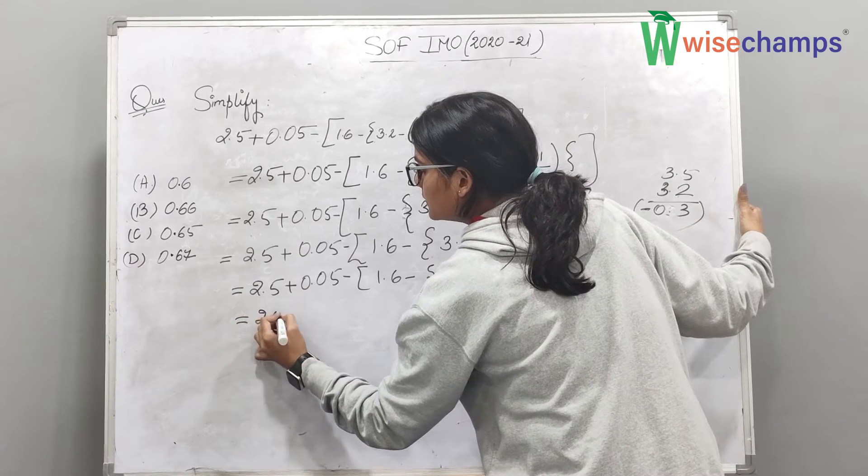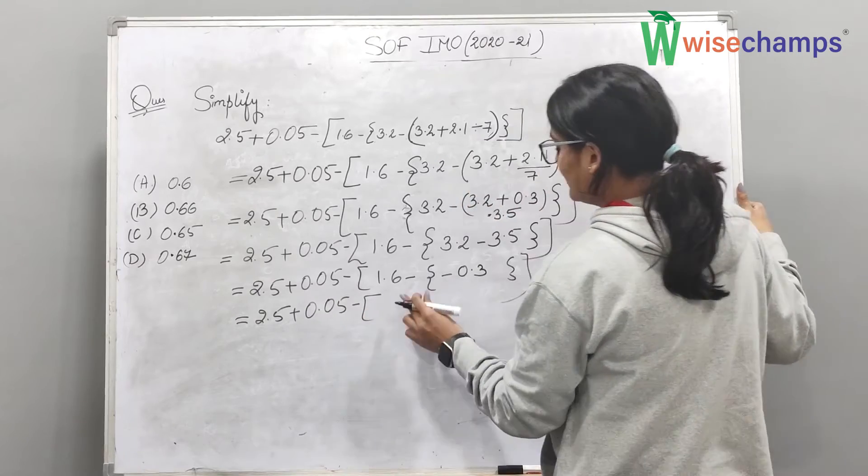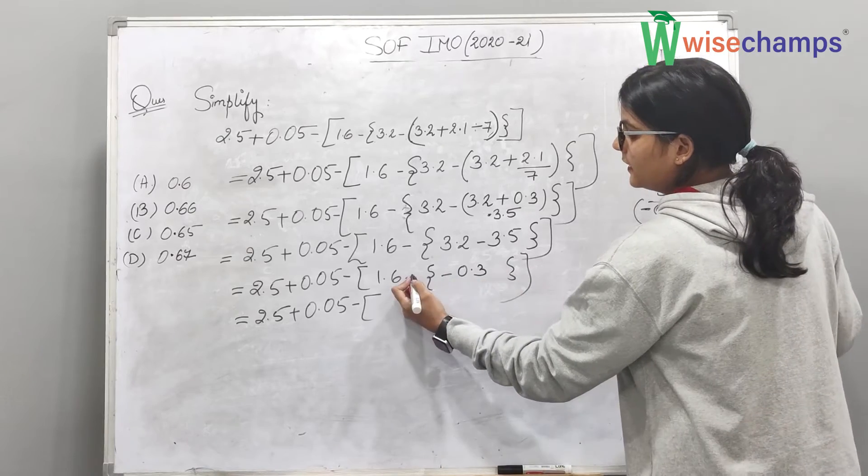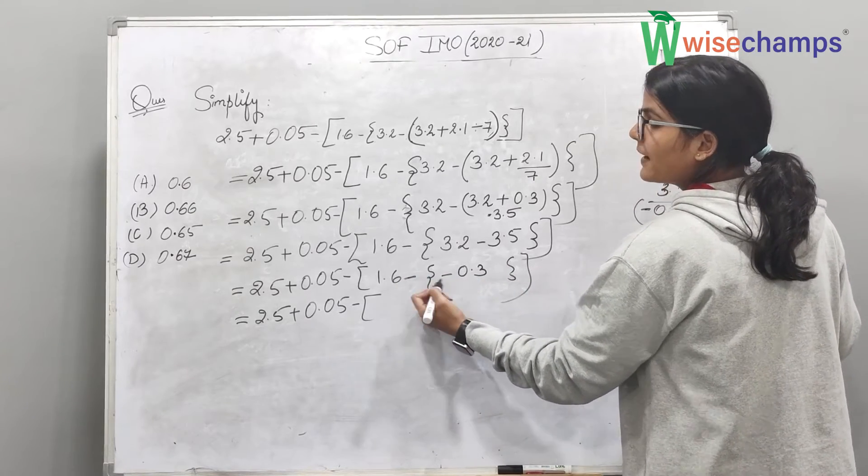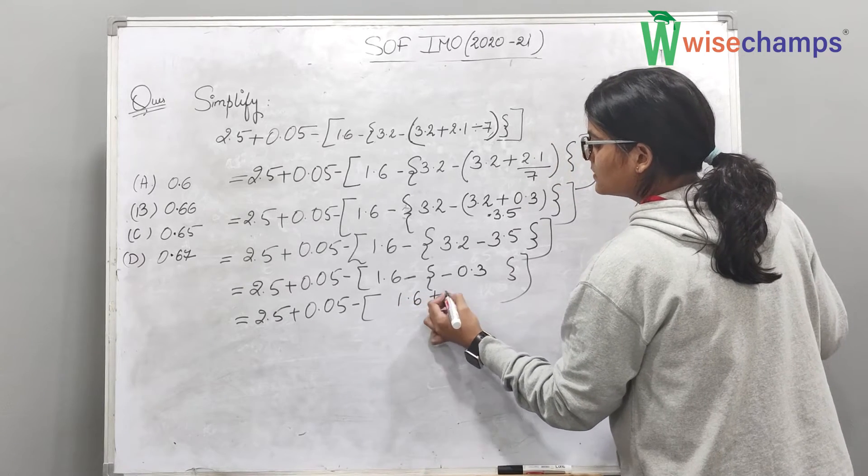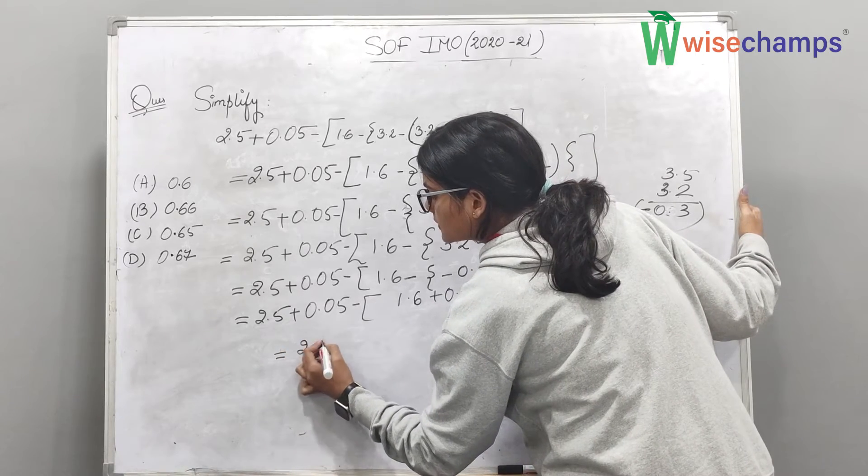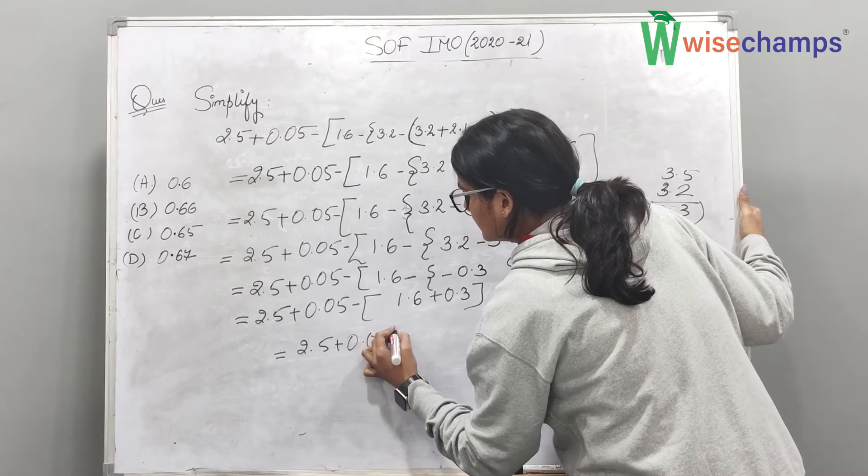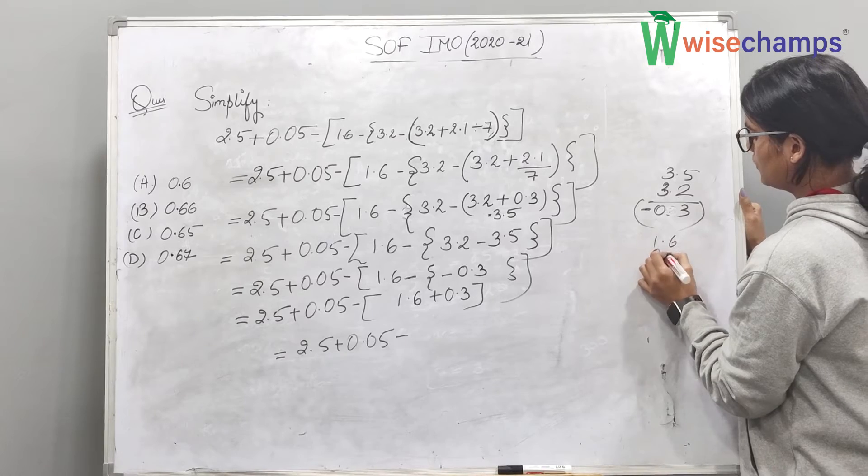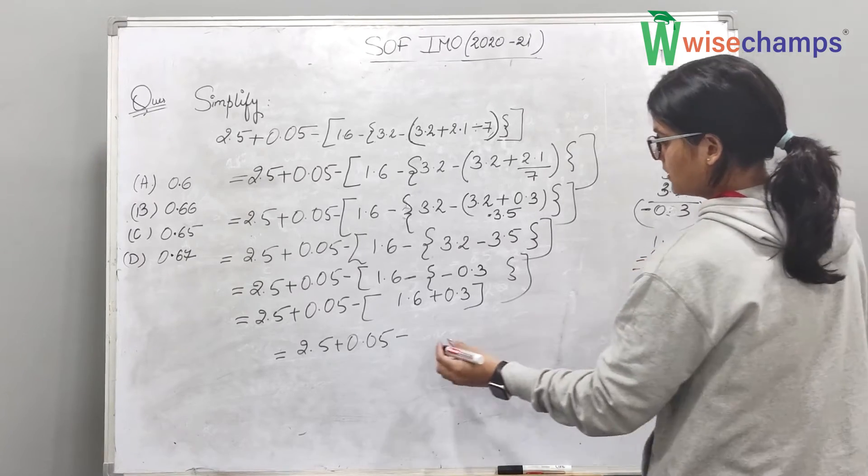Now, come to the next point: 1.6 plus 0.3. Solve it. 1.6 plus 0.3 is equal to 1.9.